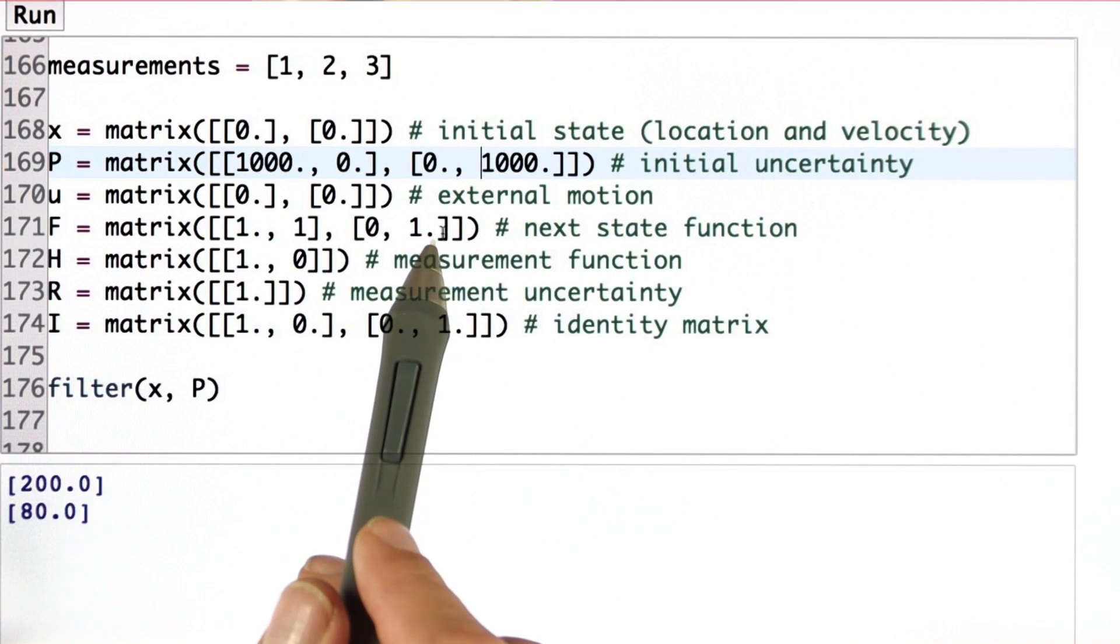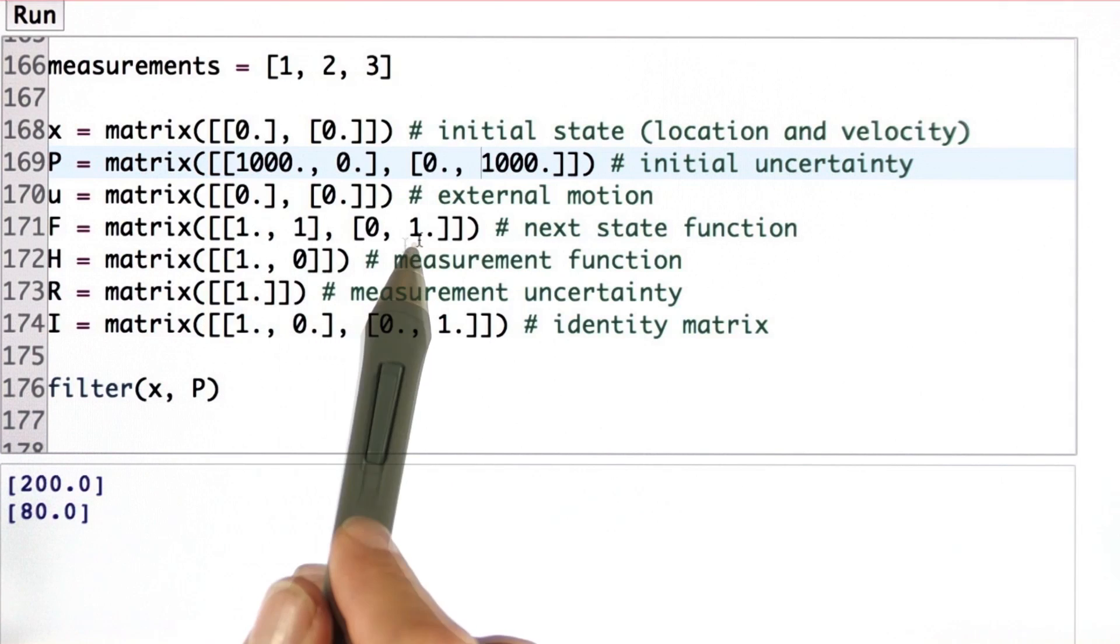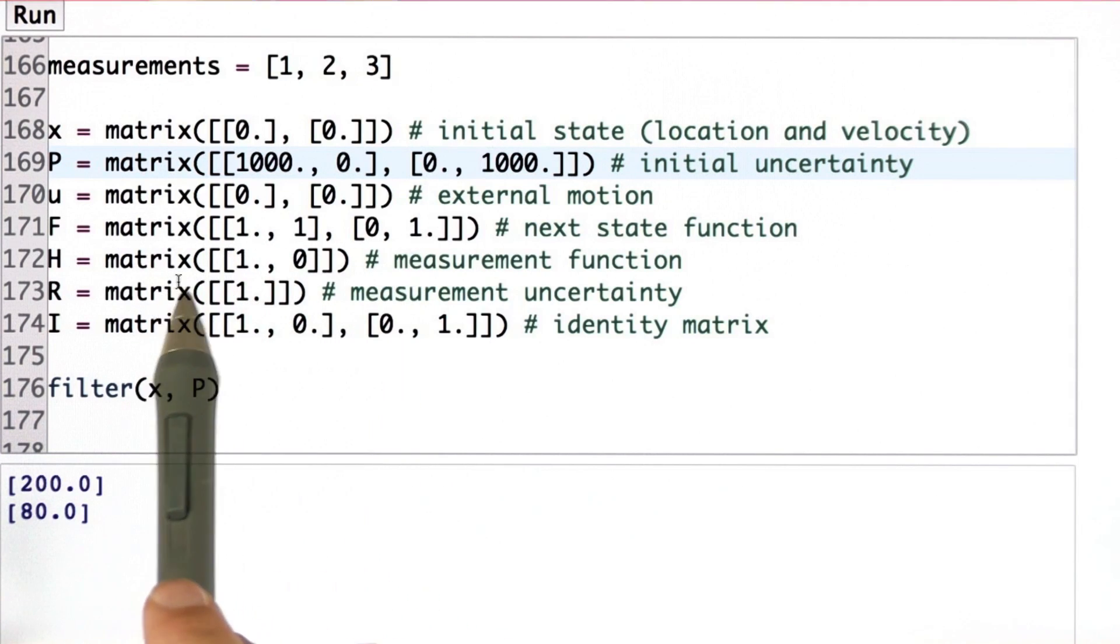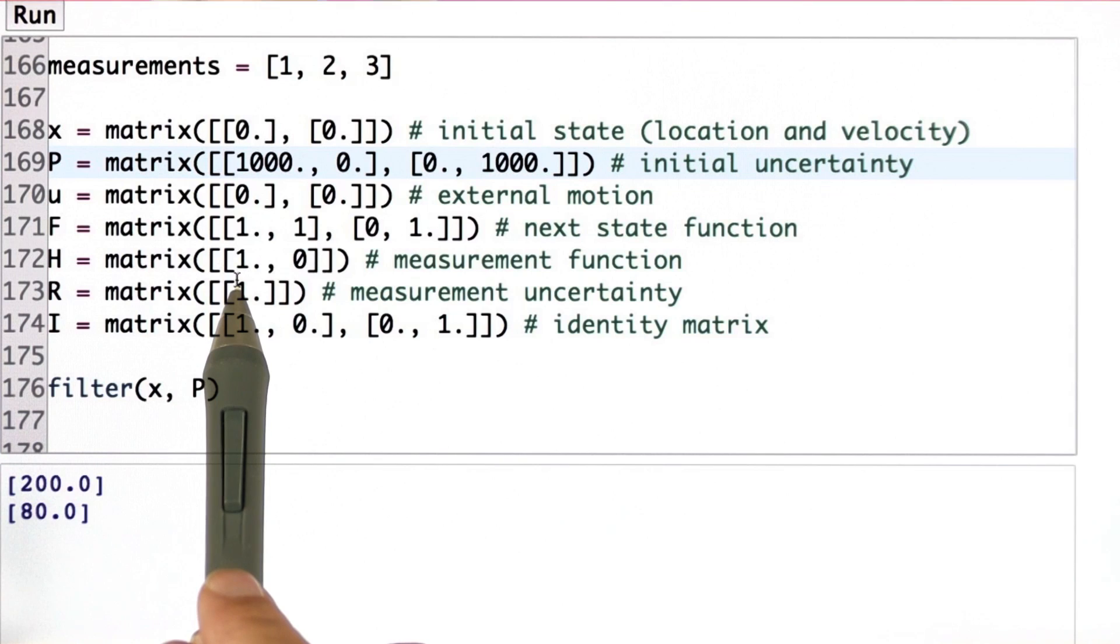That assumes that the velocity is just being added to the position. And the velocity in expectation stays the same. I build a measurement function that extracts just the first of the two values, 1 and 0. So I can observe the location, but not the velocity. I have a measurement uncertainty. It happens to be 1 in this example.